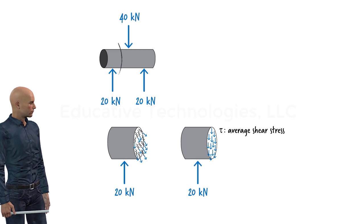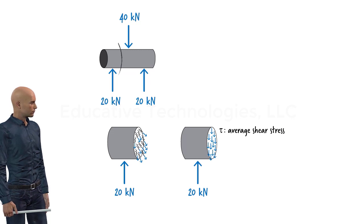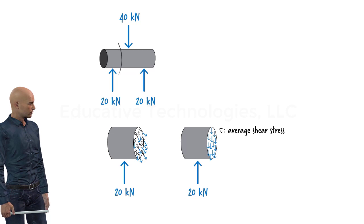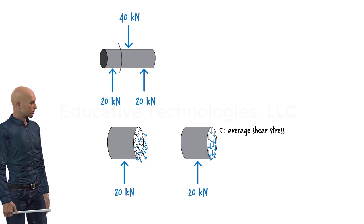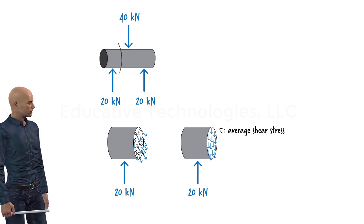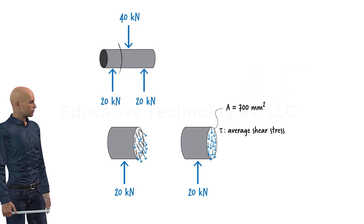Generally speaking, shear stress is not going to be distributed uniformly over such an area. However, since fasteners are small in size, we can assume a uniform tau distribution at a typical bolt cross section. Suppose the bolt has a cross sectional area of 700 square millimeters.